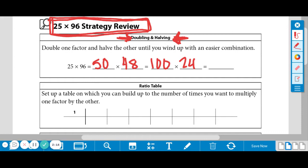That is a much easier combination. 100 times 24. We could do that in our head, because all I have to really think about is 24 times 1. And then the zeros just kind of follow it. So that is much simpler than 25 times 96. Again, if you need to pause, that is perfectly fine. And then press play when you're ready for the next strategy.